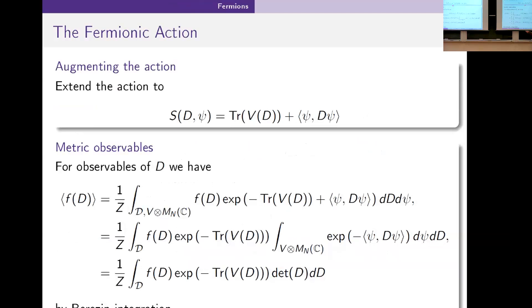We want to add the ψ D ψ term and then we restrict to observables just of the metric. We're not going to look at expectation values of this fermion field yet.